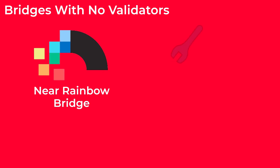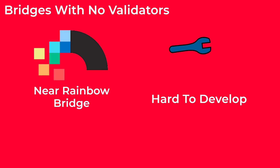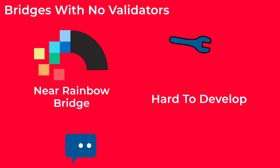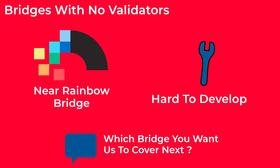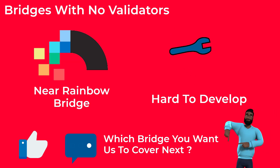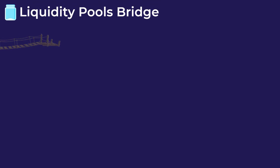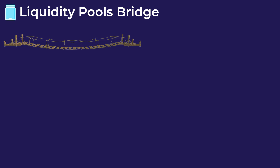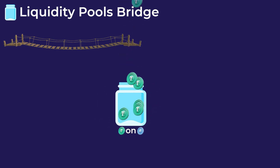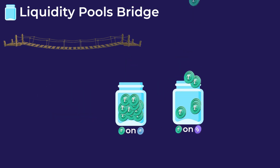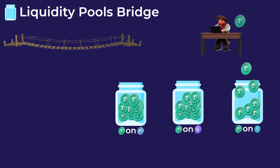There are some bridges that work with smart contracts but don't need external validators, like the NEAR Rainbow Bridge, but this type is much harder to develop and we will cover it in a separate video. The second type of bridge is based on liquidity pools. Liquidity pools are basically pools that contain a lot of tokens. Each bridge has many pools — for example, a pool for Tether on the Ethereum network, a pool for Tether on the Polygon network, and a pool for Tether on the Fantom network.